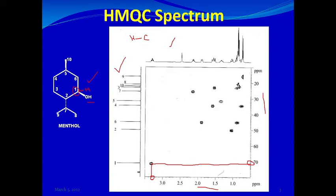Next, we have carbon number two. Looking at its contour and connecting it to the carbon scale, it resonates at around 50 ppm. Going down on the proton scale, it touches around 1 ppm. So carbon number two, a CH, has a proton that resonates at about 1 ppm while the carbon itself resonates at about 50 ppm.